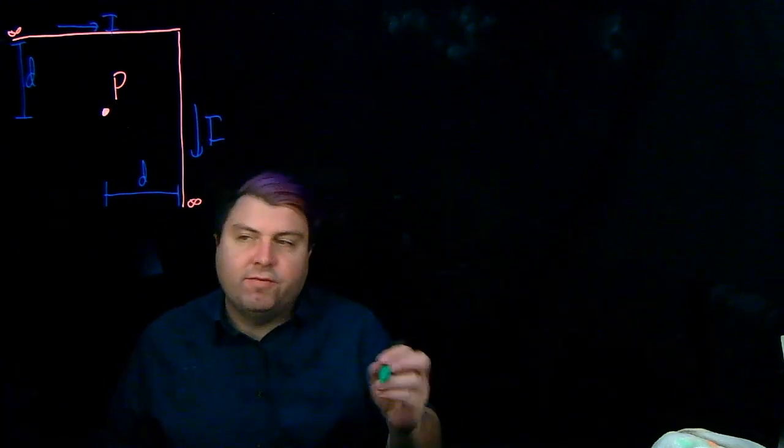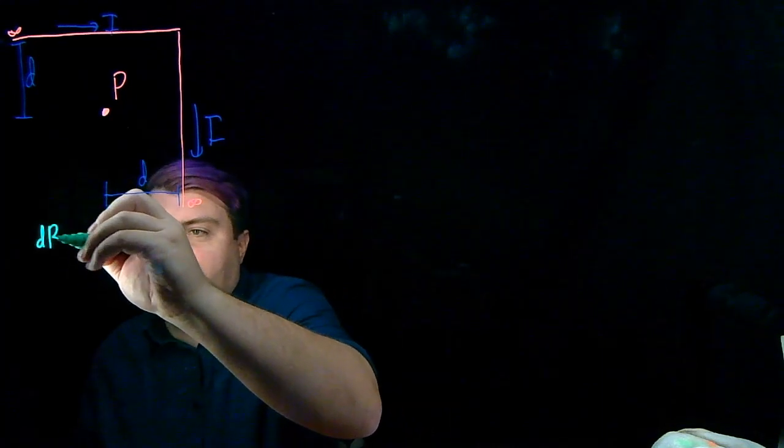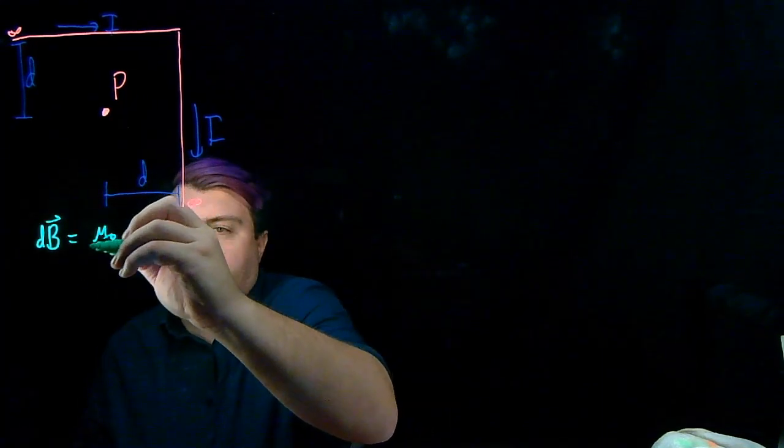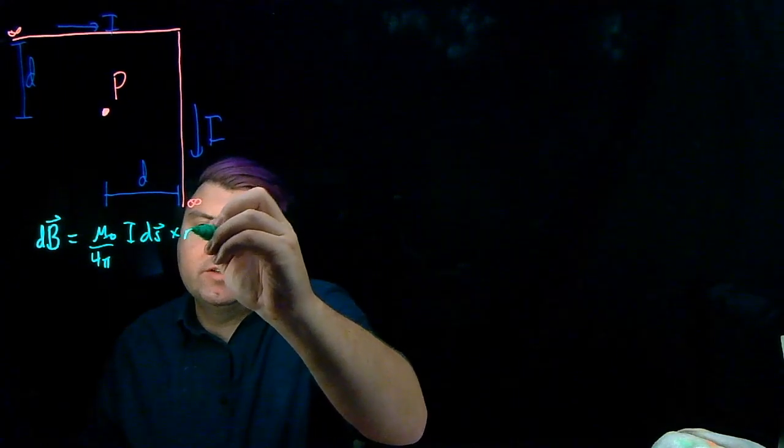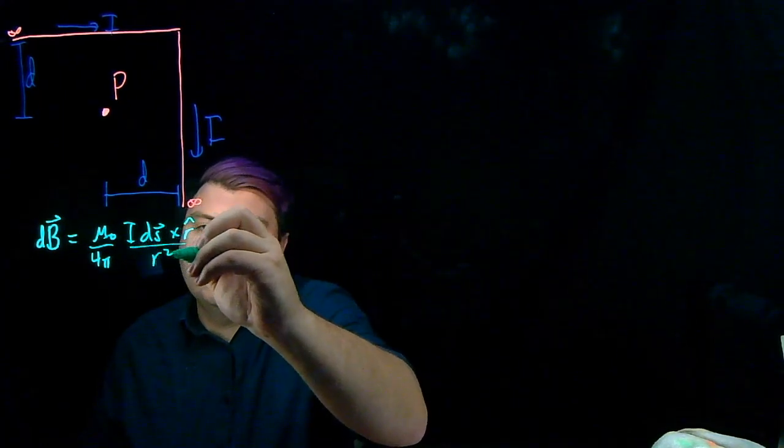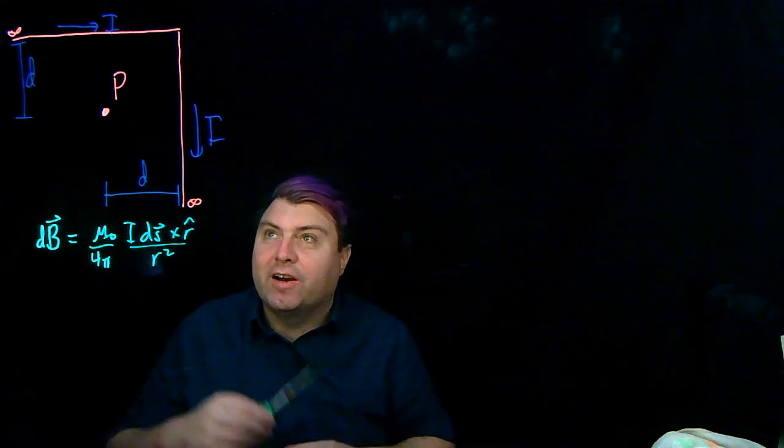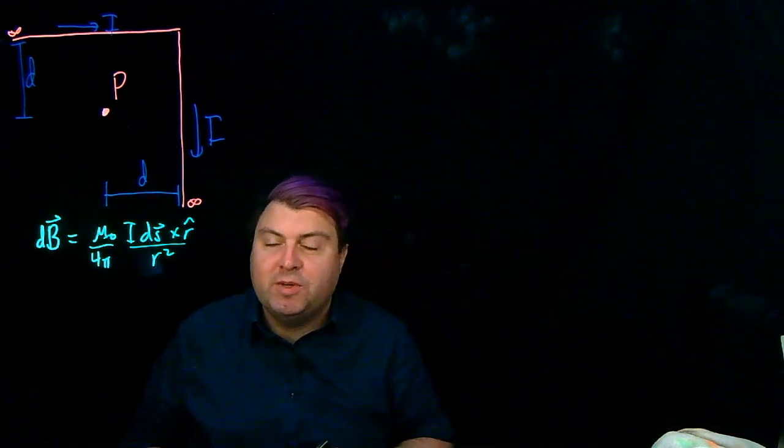So we want to use the Biot-Savart law, which gives us dB equals mu-naught over 4 pi, i ds cross r hat over r squared. We're going to have to build this out of continuous pieces.